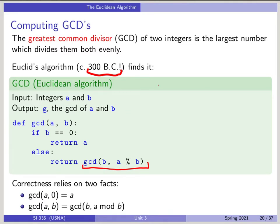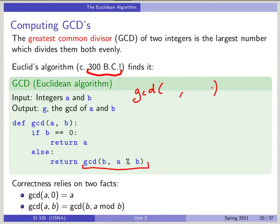For example, if we wanted the GCD of 100 and 247 — actually I should write that the other way around, because usually we want the larger number first, although it would work either way. So I'll say the GCD of 247 and 100.